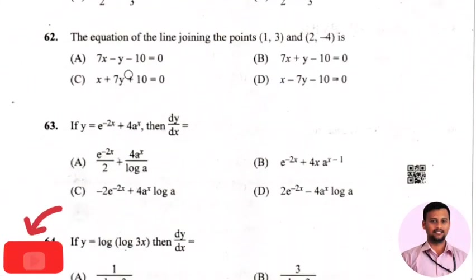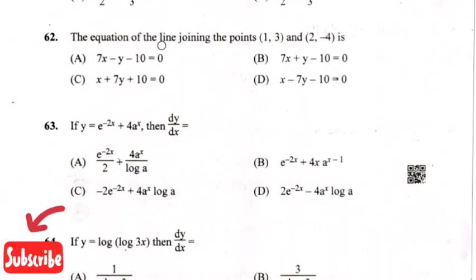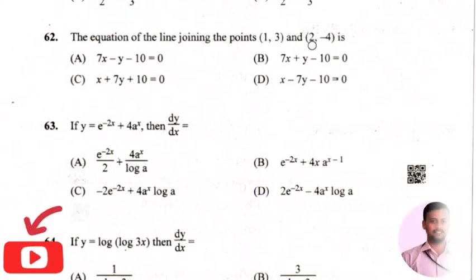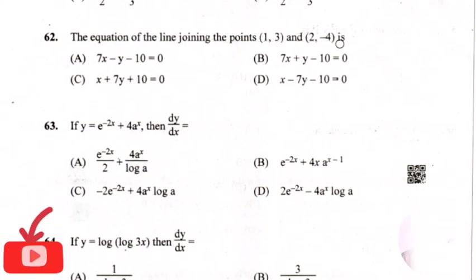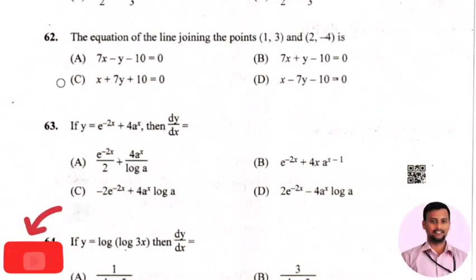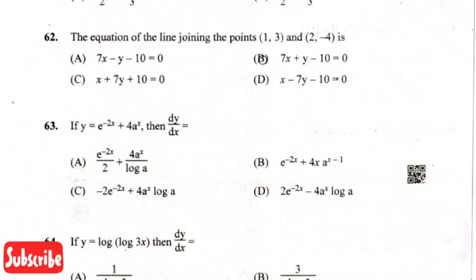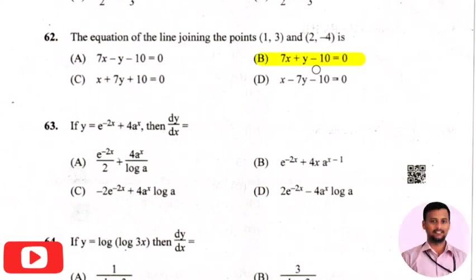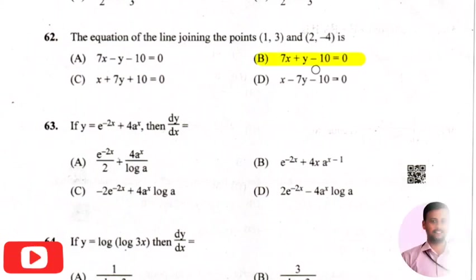The next question: the equation of a line joining the points (1, 3) and (2, -4) is? The right answer is option 2, that is 7x plus y minus 10 equals 0.